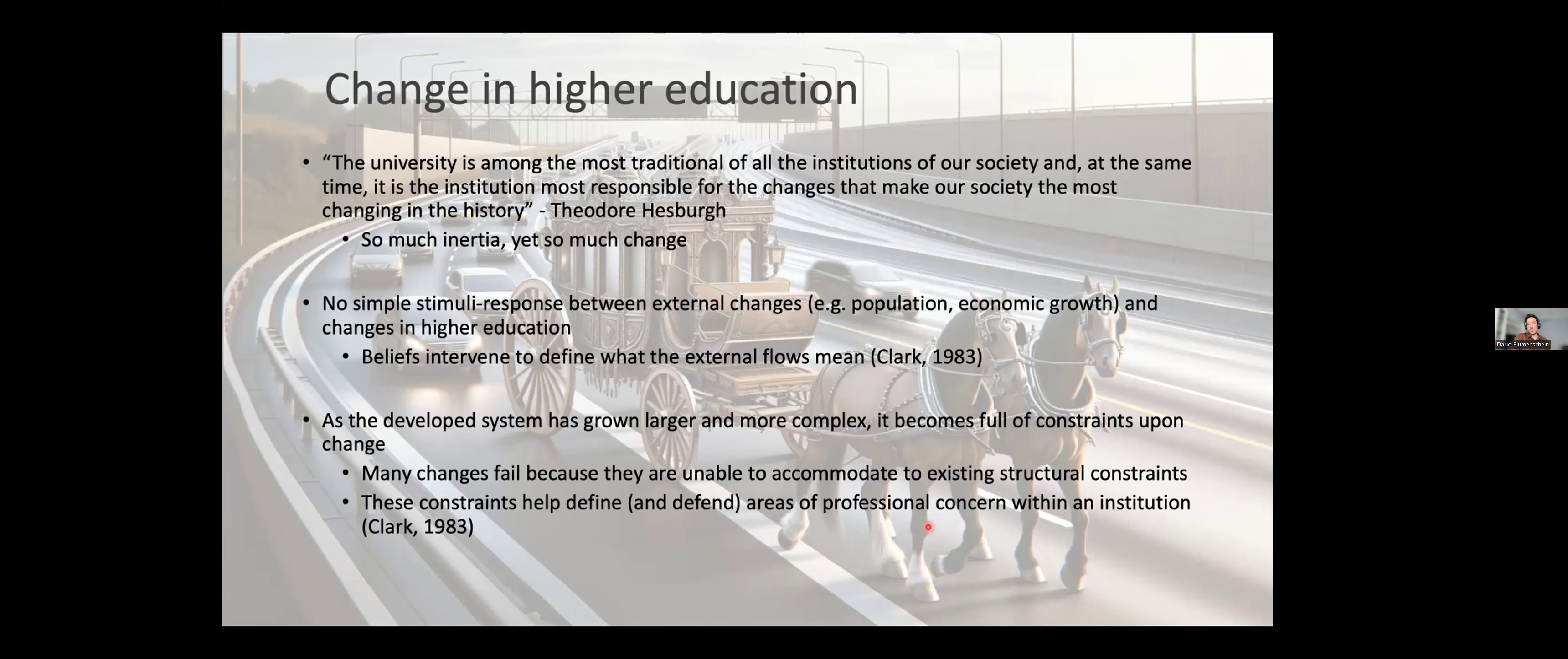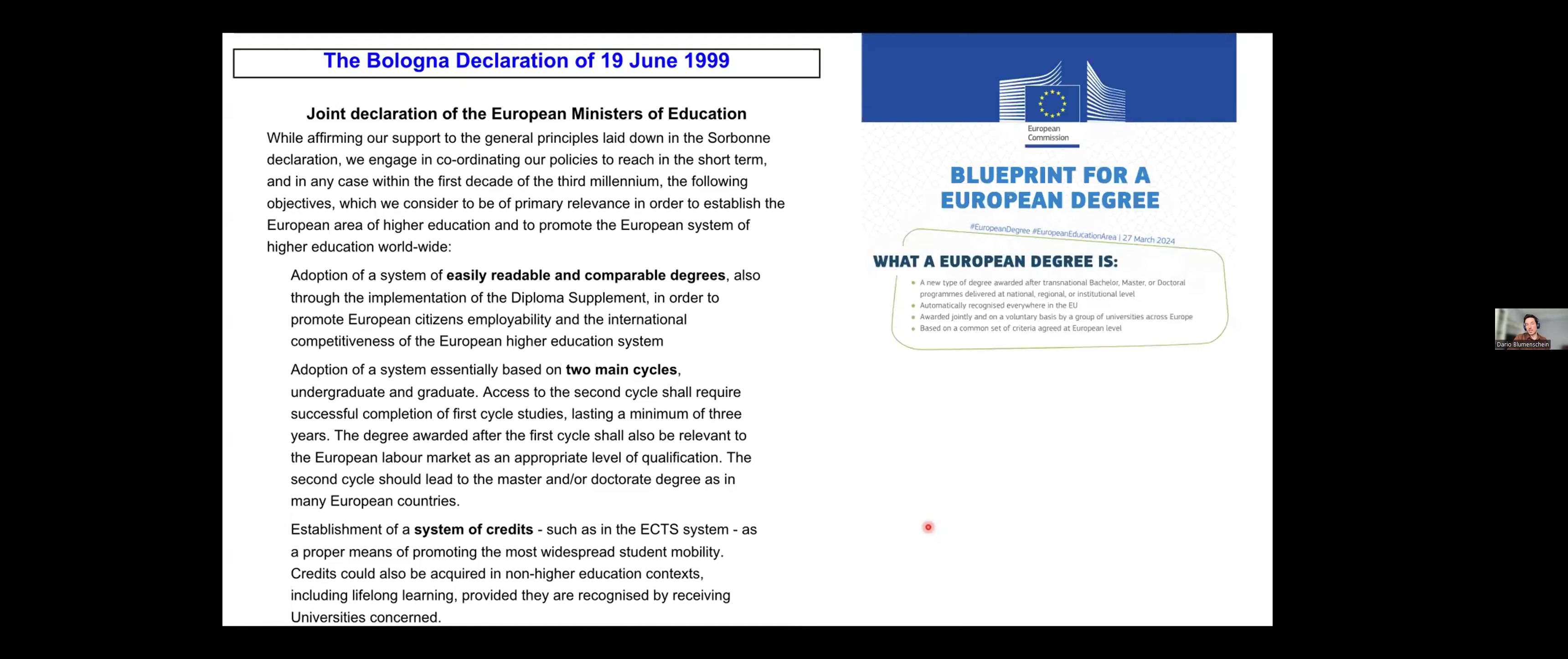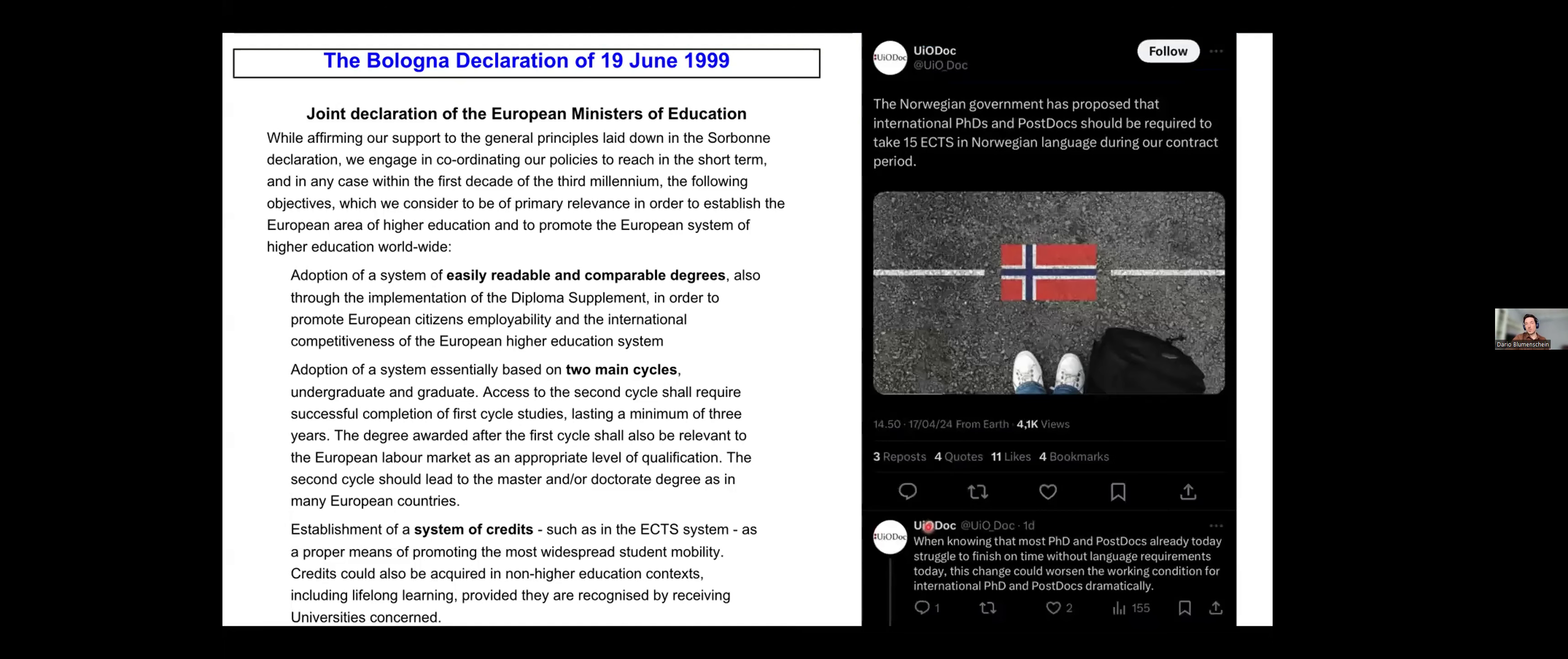But we also have to acknowledge that we have undergone quite a lot of change. We had the Bologna Declaration of 1999. We take it today for granted, but it was quite a huge change back when it appeared. We also have very recently blueprint for the European degree that I think last month came out. And for those who are interested, I think Norway will have a conversation about it. There will be a presentation somewhere discussing what it means for Norwegian higher education. And also very recently, just a few days ago, it came to my attention that there was this proposition that international PhDs and postdocs should take mandatory credits in Norwegian language during the contract period. And then different people will have different opinions about all these changes. Are they good? Are they bad? What do they mean for us? And who actually made these decisions?